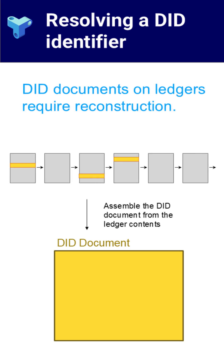Other methods anchor data to a specific blockchain or distributed ledger. These DIDs resolve by querying that ledger and reconstructing the DID document from a series of recorded operations. Examples include DIDs registered on purpose-built identity networks like INDI or on permissioned infrastructures, such as those used in government-backed ecosystems. The resolution process involves retrieving cryptographically signed updates and proofs that attest to the integrity and history of the DID document. These methods offer strong tamper resistance, but often require network access and more processing to verify state changes over time.